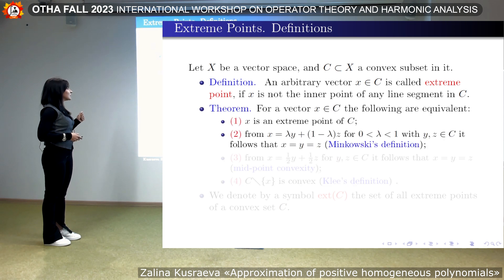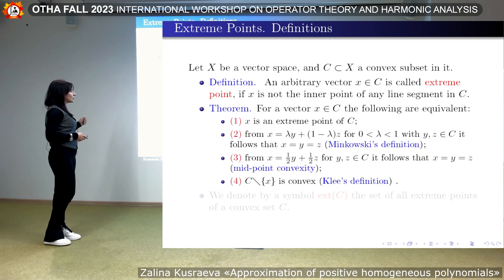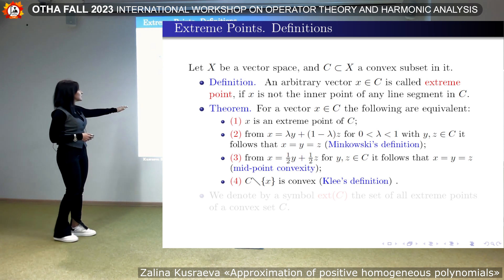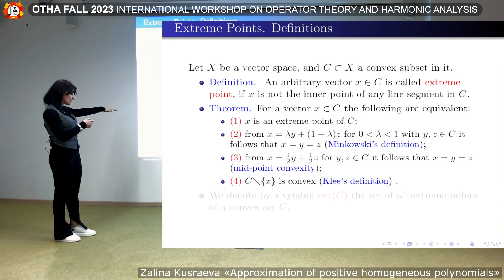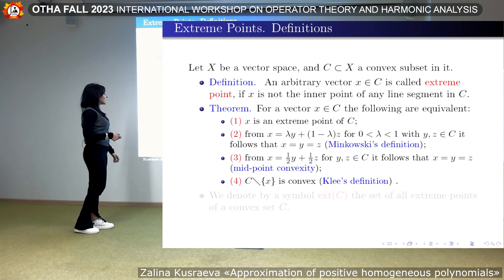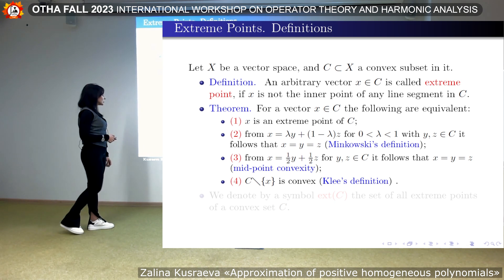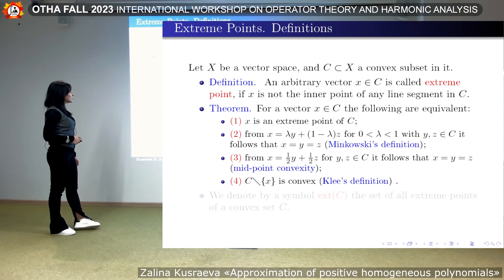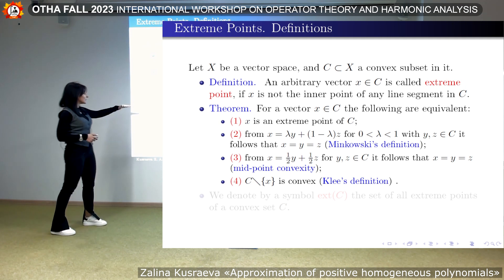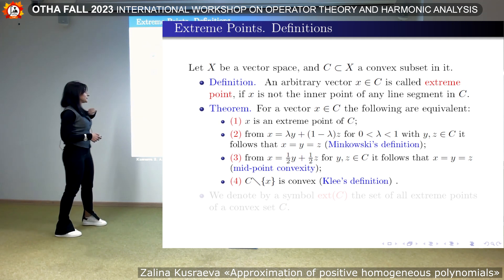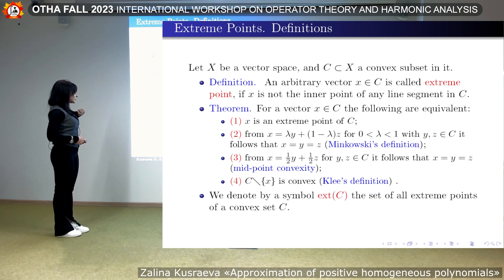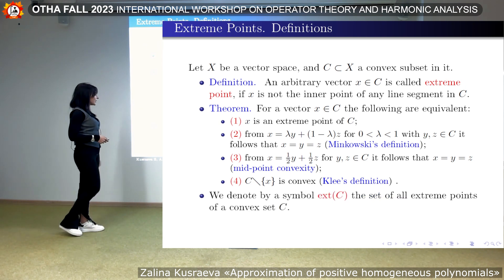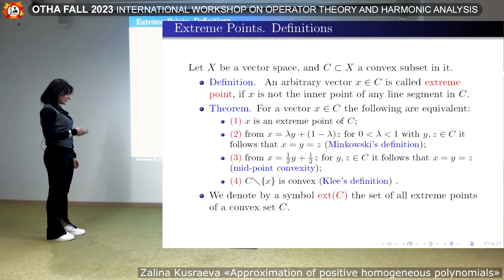There are several equivalent definitions of extreme point. Maybe interesting is the last one — the Klee definition — according to which, if we extract the extreme points from a convex set C, the result will again be convex. We denote by this symbol the set of all extreme points of a convex set C.